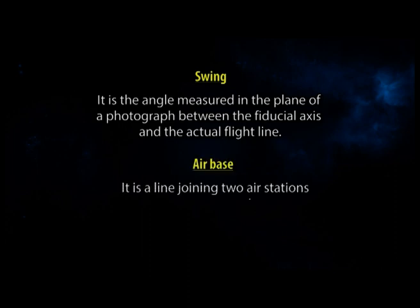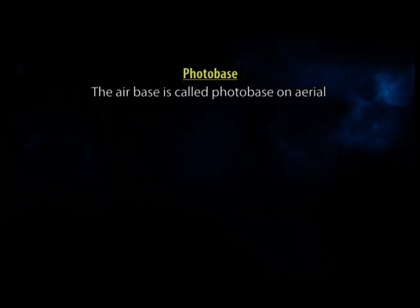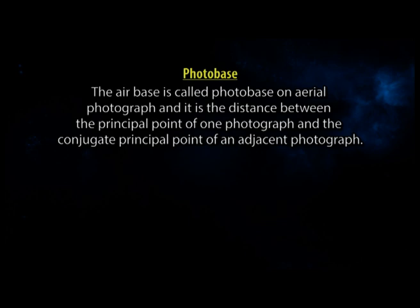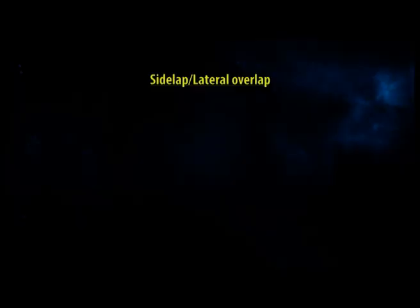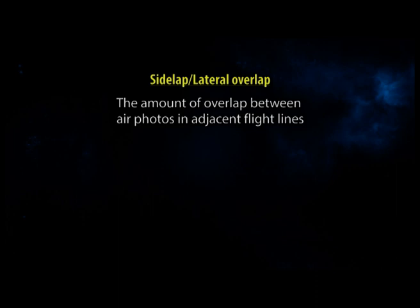Air base: a line joining two air stations or exposure stations. Photo base: the air base as expressed on an aerial photograph — the distance between the principal point of one photograph and the conjugate principal point of an adjacent photograph. Forward overlap (end lap): the amount of overlap between successive photos in a flight line to allow for stereo viewing, usually 60 to 70 percent. Side lap (lateral overlap): the amount of overlap between air photos in adjacent flight lines, usually 20 to 30 percent.